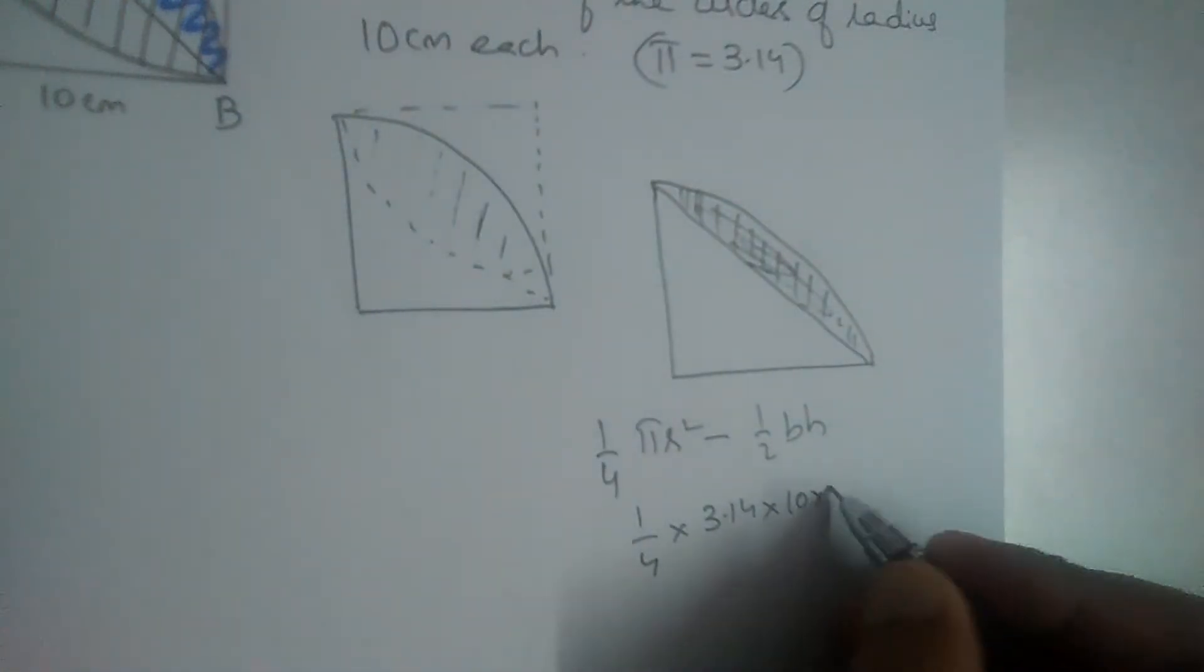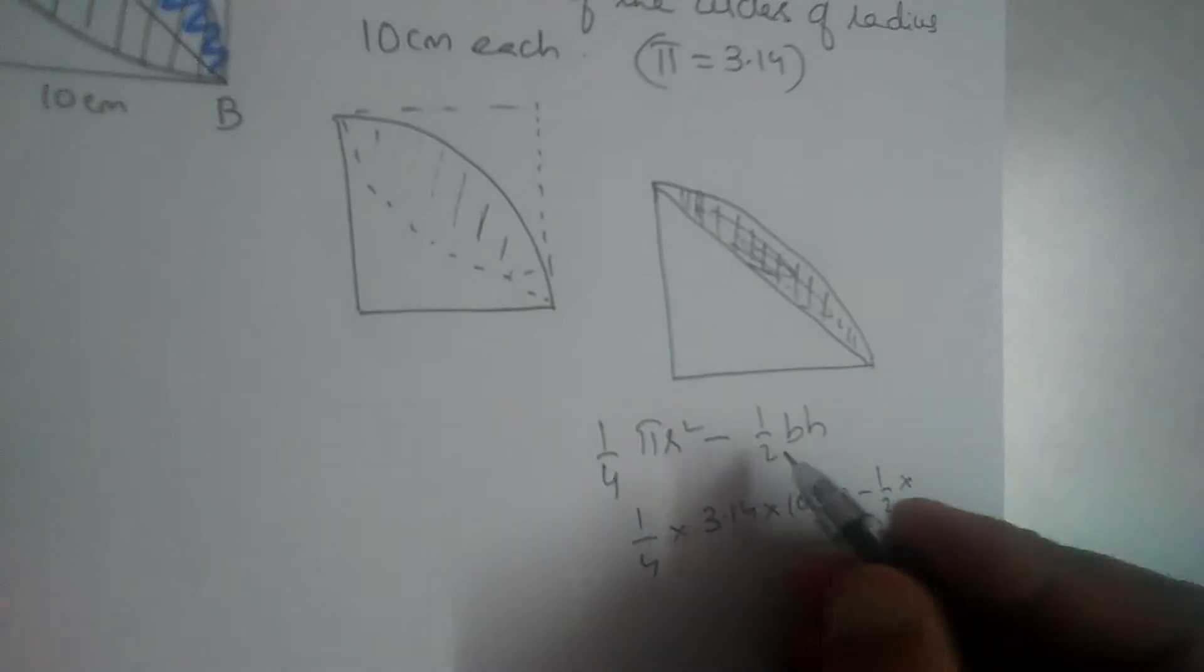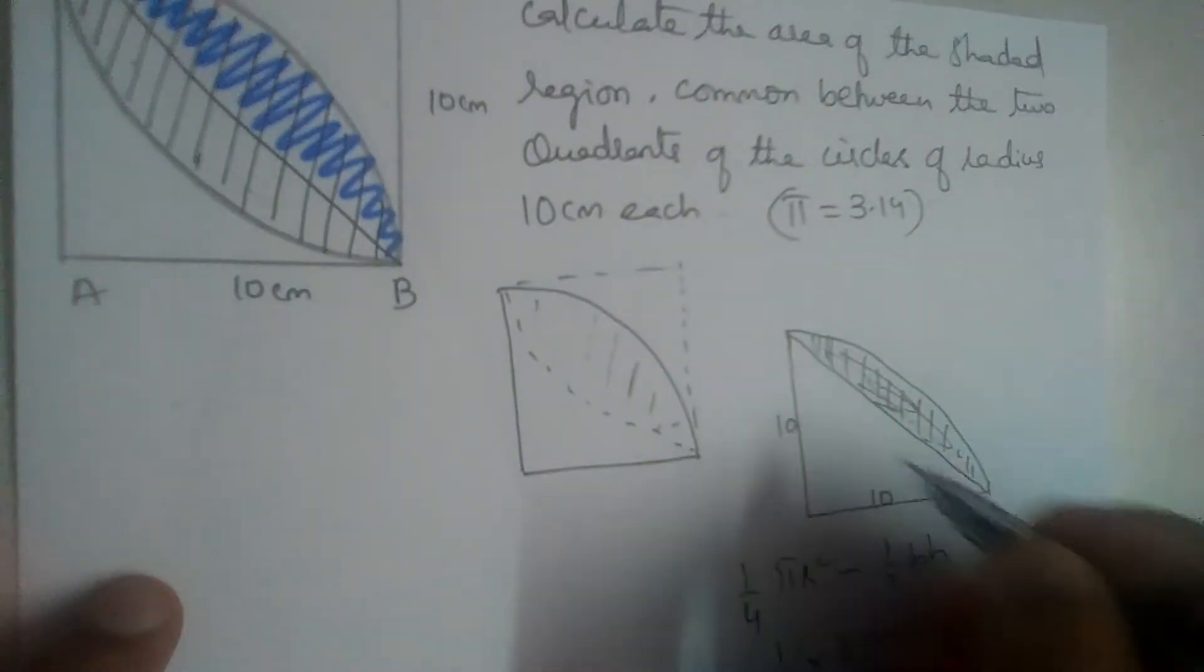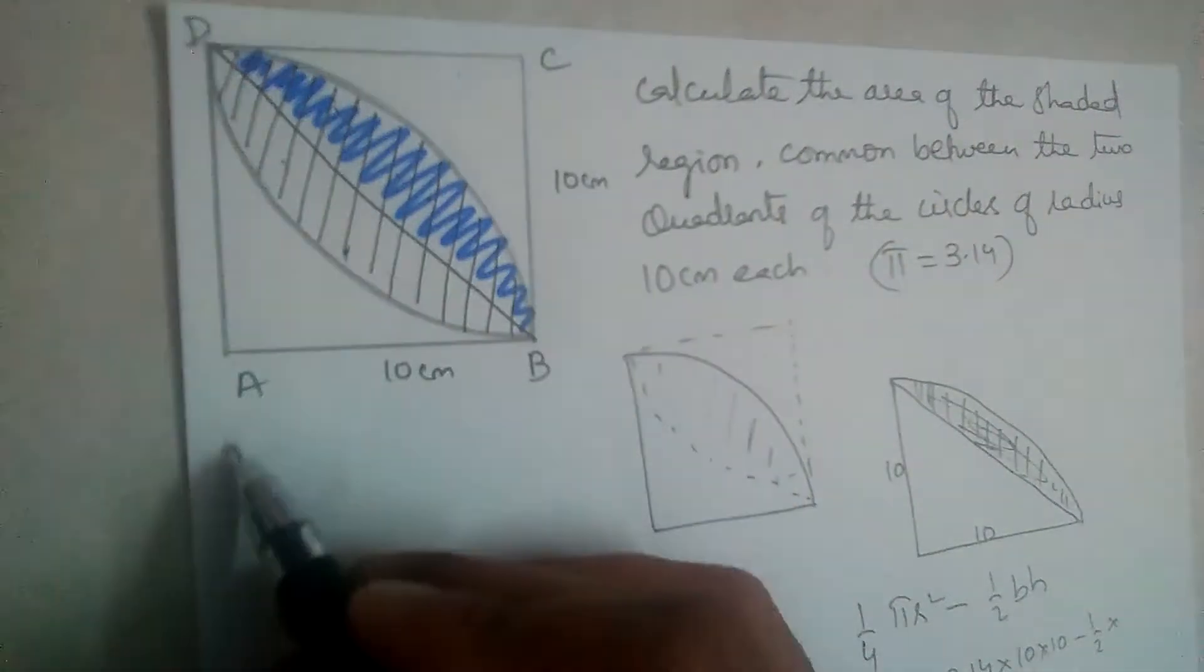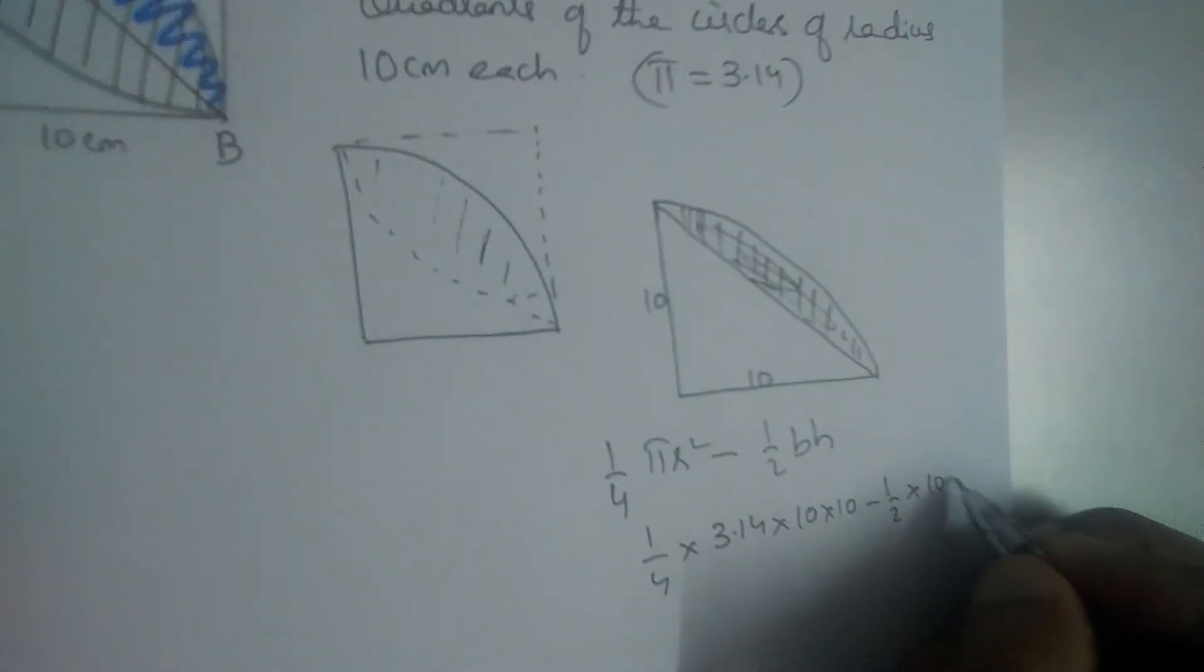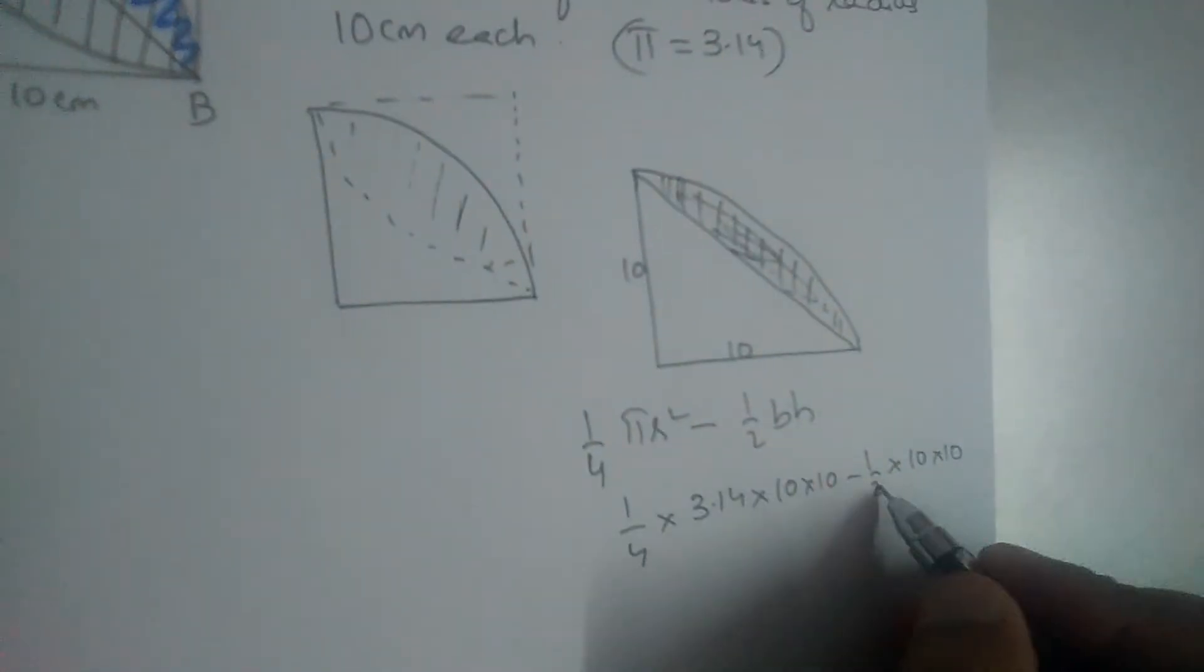So it is 10 into 10 minus half into... This is 10, this is also 10. Base is 10, height is also 10. So area of the triangle is 50.